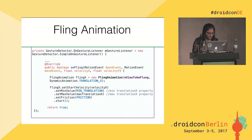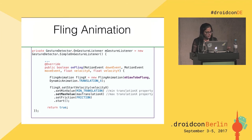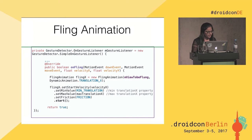I'm creating a FlingAnimation constructor, providing the object I want to animate and the property — translation X — so that the object can be flung horizontally. Then I set the three parameters: start velocity, minimum translation constant set to zero, maximum translation set to the width of the phone, and a friction constant of 1.1f. Finally, you start the fling animation inside the onFling method, and you can see the view is tuning and dancing with your finger.